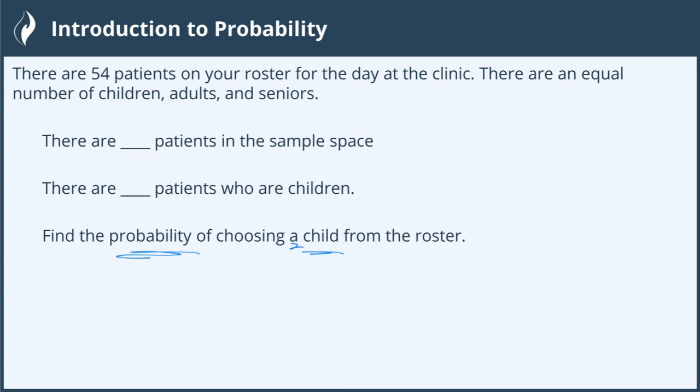The first thing, of course, is to determine the sample space, and that's why they ask us that first. Because there are 54 total patients, 54 is basically our sample space. So we'll just write 54 here — it's out of 54 people.